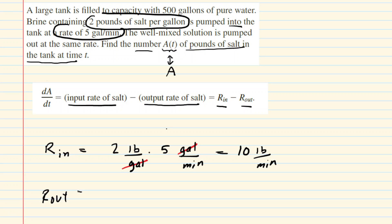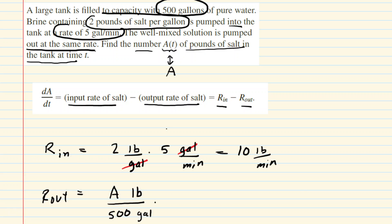R_out is a little bit trickier, because the amount of salt coming out of the tank varies as a function of time. The amount of salt in the tank at a given time would be A pounds, and that has to be divided by the number of gallons in the tank. This tank has a constant volume of 500 gallons. So we divide A by 500, then multiply by the output pumping rate of 5 gallons per minute.